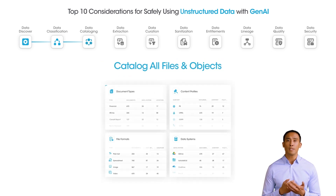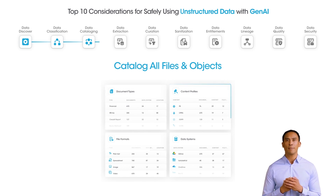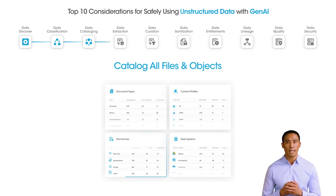Traditional cataloging tools struggle with handling unstructured data. Organizations must leverage data catalogs powered by machine learning to catalog all files and objects along with their contextual metadata, for enhanced searchability and accessibility across the organization.